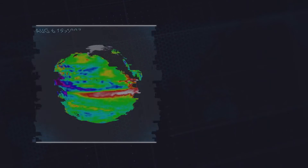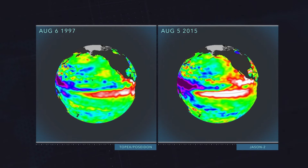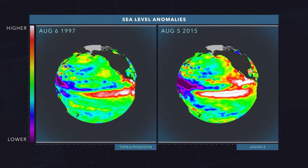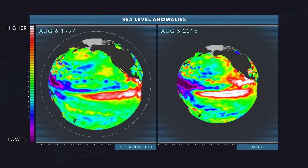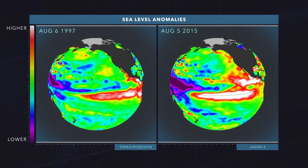On the left we're viewing August 6, 1997, and on the right we're looking at August 5, 2015 — they look pretty similar. That's the globe, and what we have here are sea level anomalies. The red and white zones along the equator indicate where the level of the ocean is elevated, meaning pressures are lower. This is 1997, and this was 2015 leading into 2016, and the 2015 event is actually a little bit stronger.